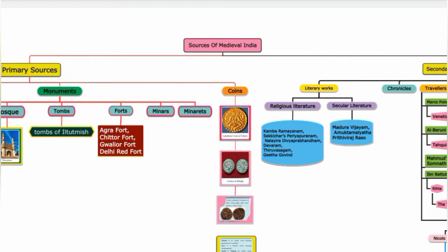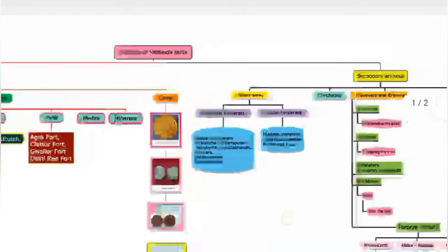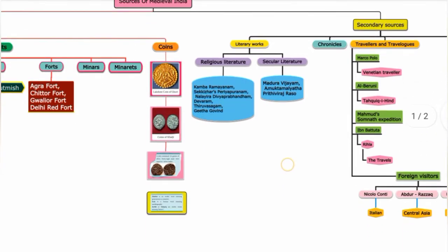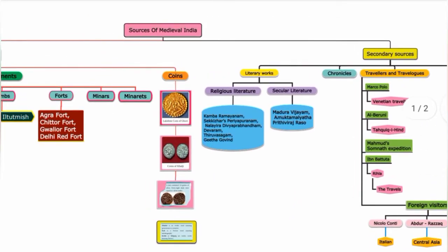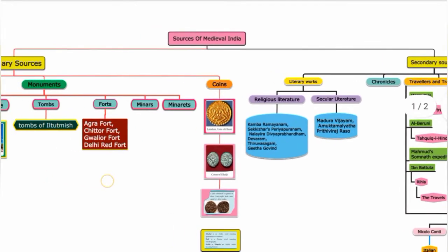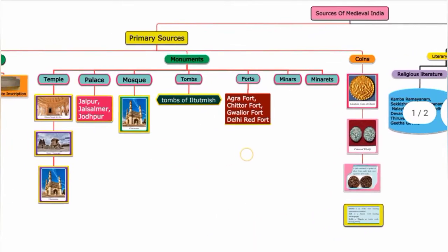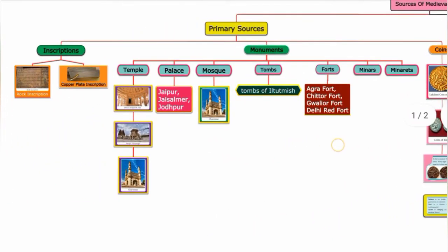Primary sources include all materials. Secondary sources include written materials such as literary works and books. So let us look at primary sources and their materials.